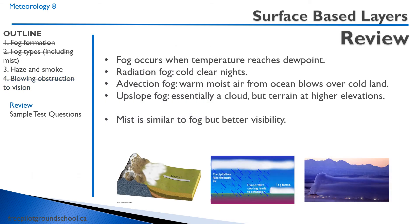Fog occurs when the temperature reaches the dew point. Radiation fog occurs on cold, clear nights where the heat from the earth radiates out into space. Advection fog occurs in the maritimes, where warm moist air from the ocean blows over the cold land with strong winds and can last days at a time. Upslope fog is essentially a cloud but the terrain is at higher elevations. Mist is similar to fog but with better visibility — five-eighths of a mile or better.